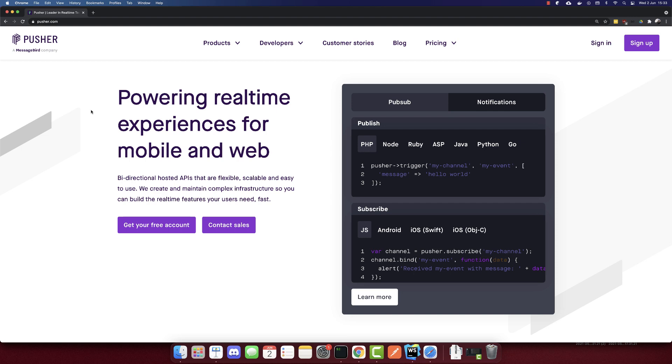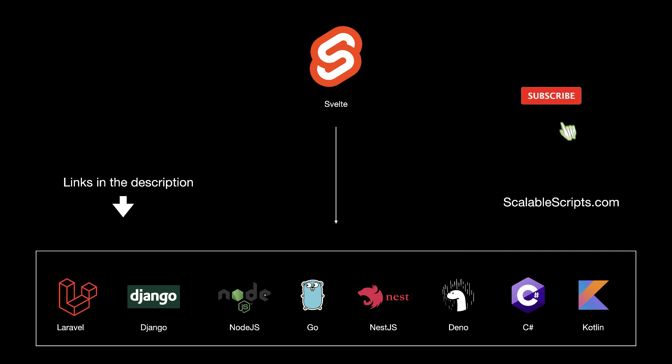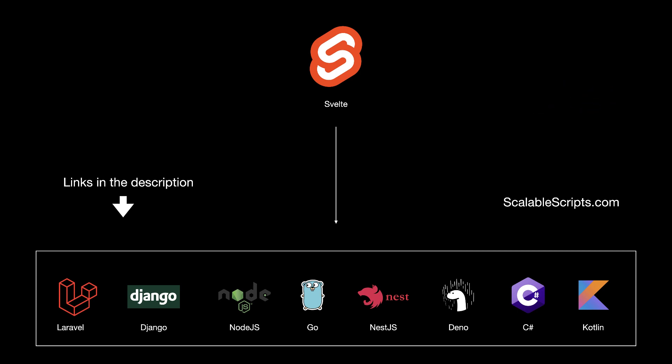In this video, we'll build a chat app using Svelte and Pusher. Before we build the app, I want to remind you that this video can be combined with other videos. If you want to use Svelte with any of these backend frameworks, I provided some links in the description. Make sure to complete one backend before continuing, because it is required. Now let's complete the Svelte app.